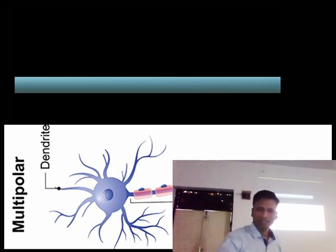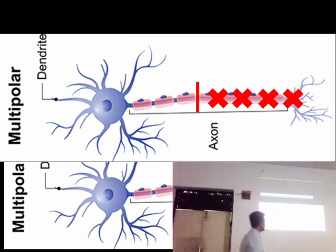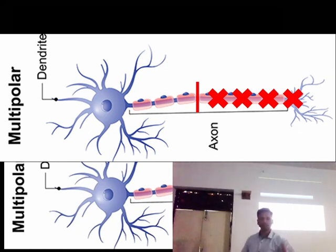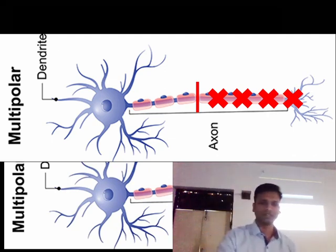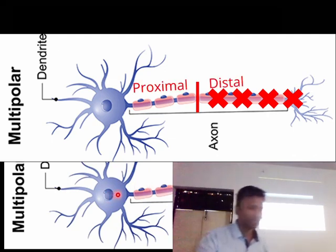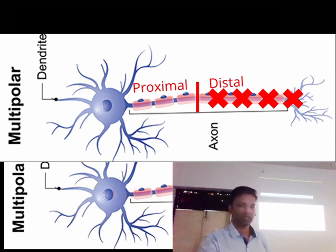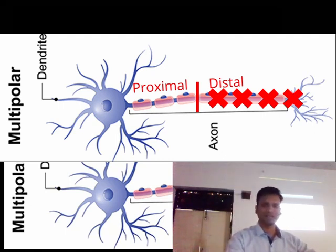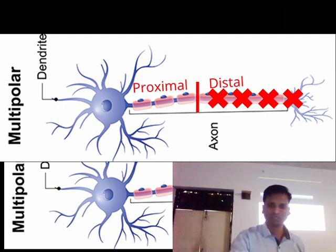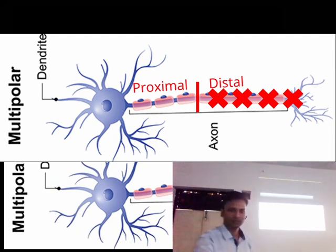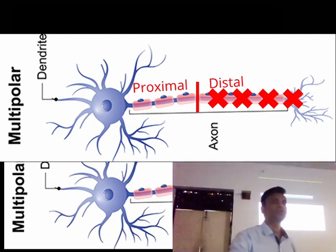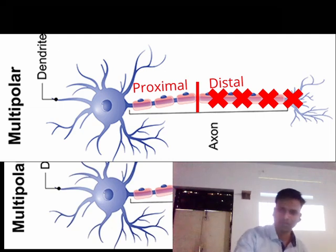If for some reason there is total discontinuity — an injury — at a region of the axon, then the nutrition from the neuron cell body is not able to reach the distal portion. The distal segment is the one further away, the proximal is closer. Since the distal segment cannot receive nutrition, it will undergo degeneration.